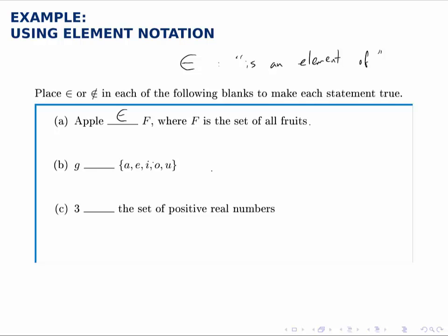For part B, notice that the set on the right does not include G. So G is not an element of this set. So we write that symbol with a slash through it. It's not an element.